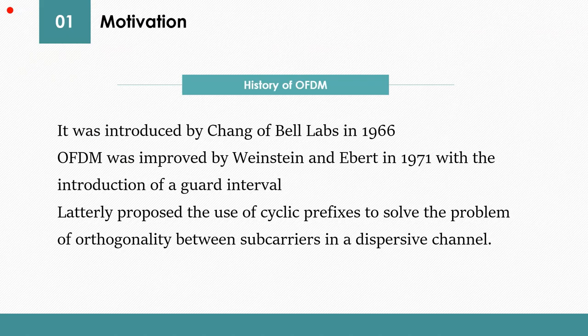The history of OFDM is long. It was firstly introduced by Chang of Bell Labs in 1966. OFDM was improved by Weinstein and Ebert in 1971 by introducing the guard interval. A couple years later, cyclic prefix was introduced to solve the problems of orthogonality between subcarriers in a dispersive channel.